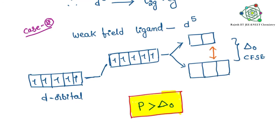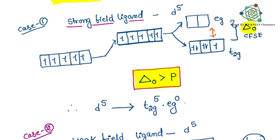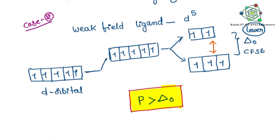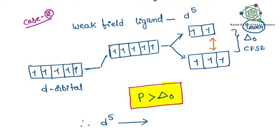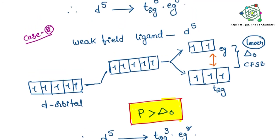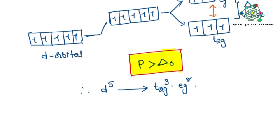Because pairing energy is higher, there is no pairing. That's why three single electrons go to T2g and two single electrons go to Eg. Instead of pairing, electrons move to Eg orbitals easily because delta-O energy — the splitting energy or gap — is low. Therefore the electronic configuration of the octahedral complex with a metal ion having d5 configuration changes to T2G³ and EG². For calculating crystal field stabilization energy, this clarity is essential. Thanks for watching.